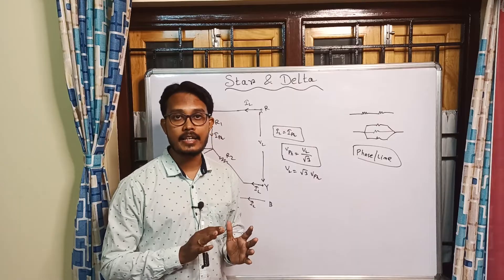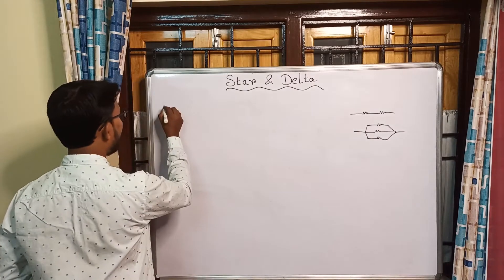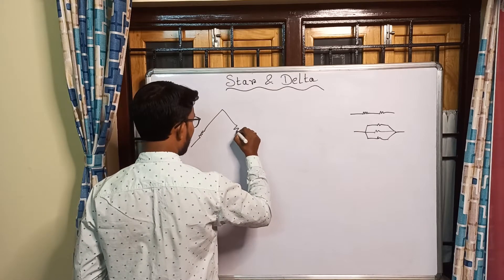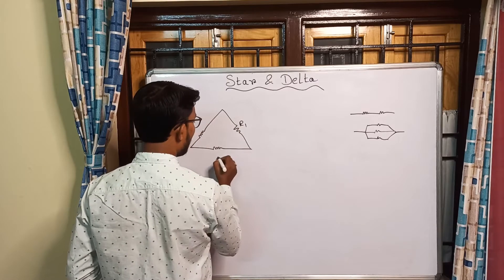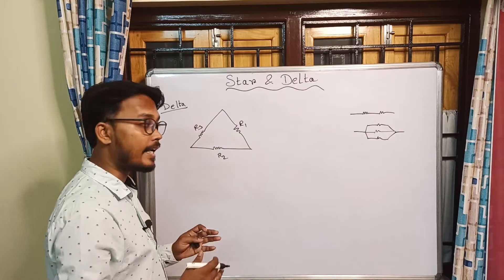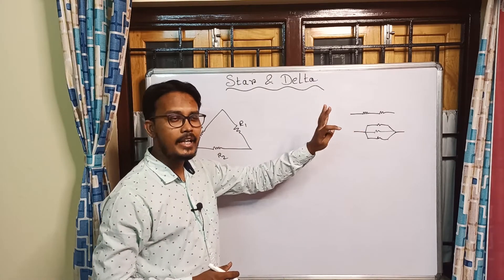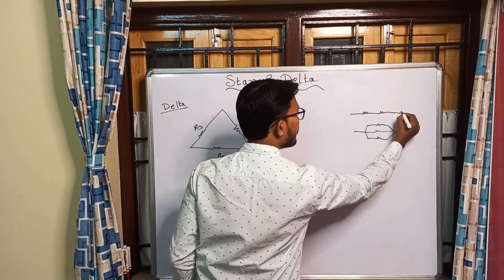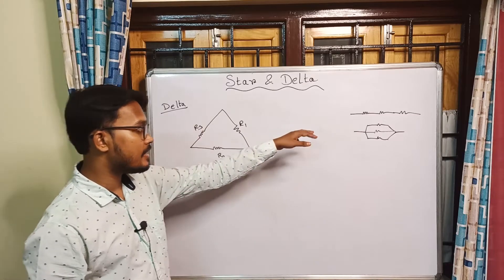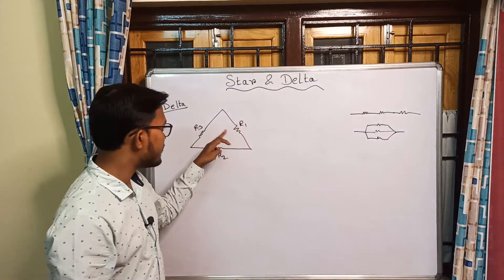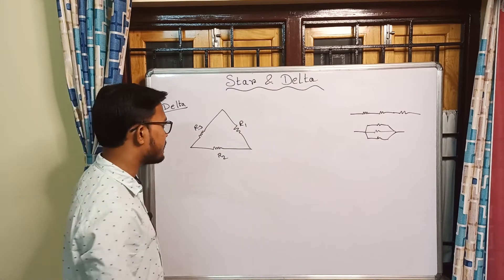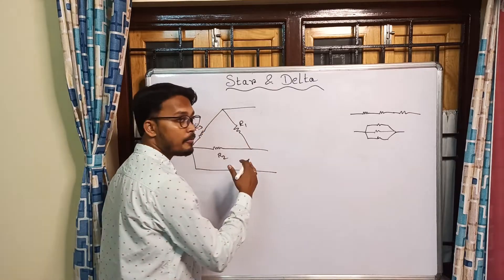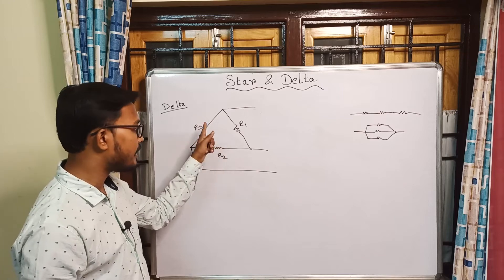Now we will look at the delta connection. The delta connection is similar to a series connection. If we take three resistances in series and connect the two open end points together, it becomes a delta connection. In delta connection there is no common neutral point — each resistance connects between two line terminals.